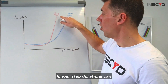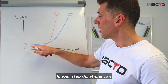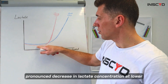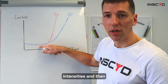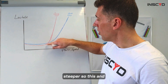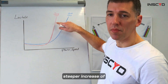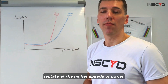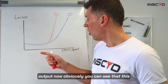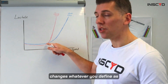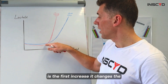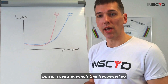In contrast, longer step durations likely result in a more pronounced decrease in lactate concentration at the lower intensities, and then an earlier and steeper increase of lactate at the higher speeds or power output. You can see that this changes whatever you define as the first increase — it changes the power or speed at which this happens.